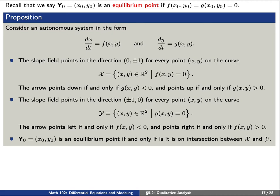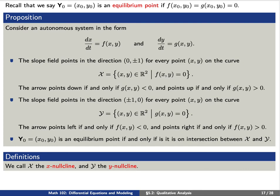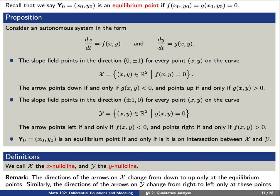We call curly-X the x-nullcline and curly-Y the y-nullcline. Notice that on the x-nullcline we may have arrows pointing either up or down; the direction of the arrow changes only at the equilibrium points. Similarly, for the y-nullcline, we'll have arrows that either point to the left or to the right, and these arrows change direction also only at the equilibrium points.